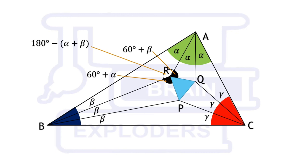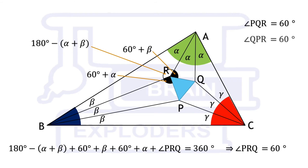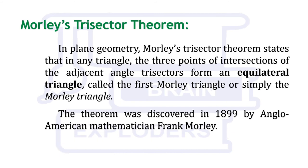In triangle ABR, angle ARB is 180 minus alpha plus beta. Since one complete rotation equals 360 degrees, therefore, on adding all the angles formed at point R and equating them to 360, we find that angle PRQ is 60 degrees. It is an interesting result that angle PRQ and hence other angles of triangle PRQ are independent of angles of triangle ABC. This was the proof of Morley's trisector theorem.